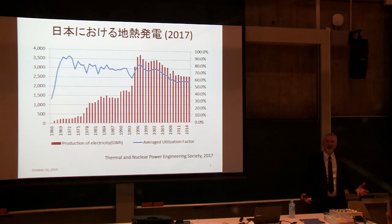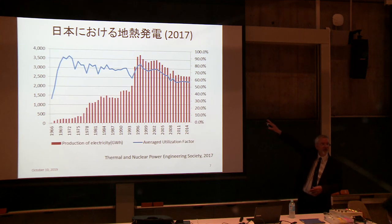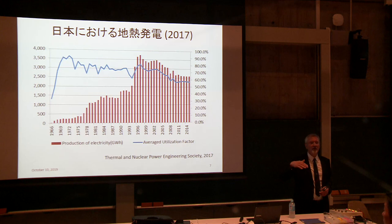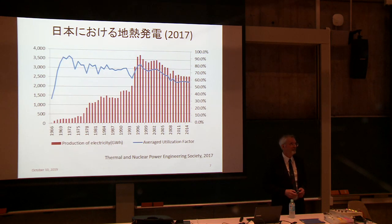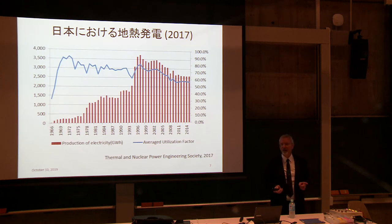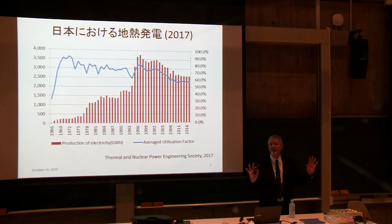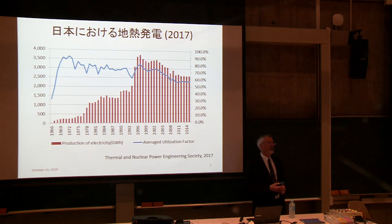Geothermal developments take steam from the ground, bring it to the surface, and convert it to electricity. Over time, the resources in the subsurface tend to run down — that's the reason for the slow declining slope. The average utilization of plant capacity is also slowing down because of reduced steam availability. But things changed in 2011 — you'll know why — because of the Fukushima nuclear accident. Government, public, and business interest in geothermal came back as a result.